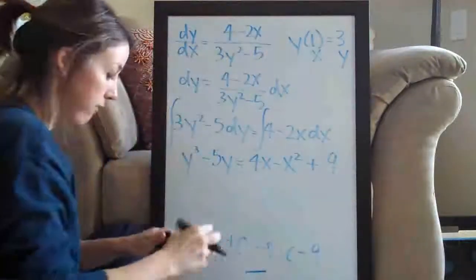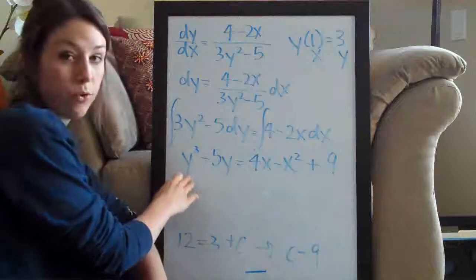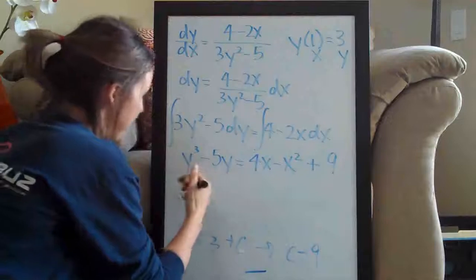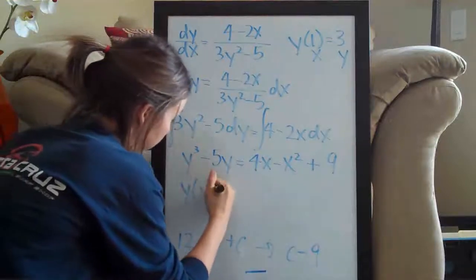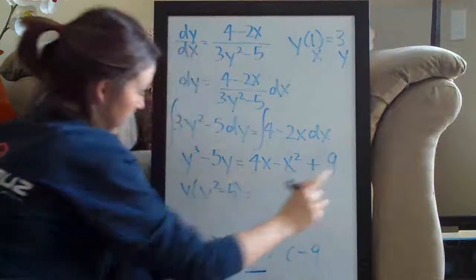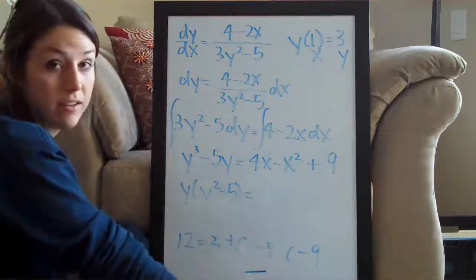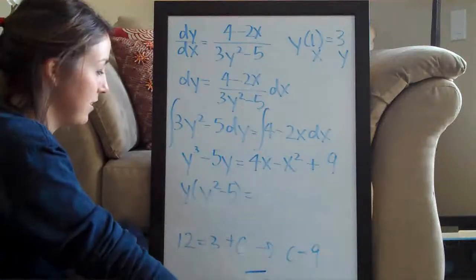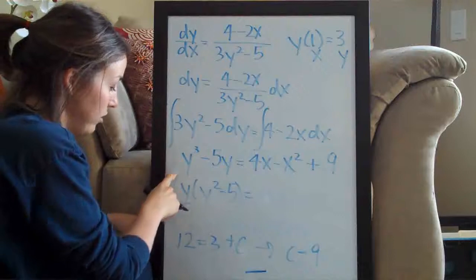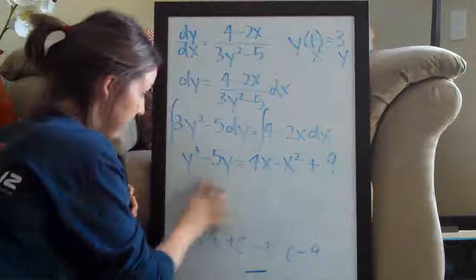And normally our final step in a problem like this would be to solve this equation for y. But we can tell automatically that we can't solve for y. As you can see, we could maybe factor out a y, y times y squared minus 5 equals the right side. But there's no way to, at least not in this kind of level of calculus, to solve the left hand side of this equation for y.